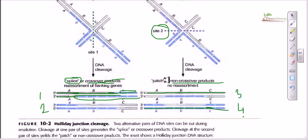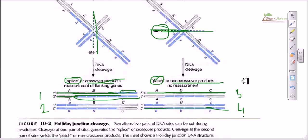That is why we call this kind of product non-crossover products, also called patch recombination products. So to summarize: splice recombination products come from vertical cutting and are crossover products; patch recombination products come from horizontal cutting and are non-crossover products. The take-home message is that resolution is essential — we start with two different DNAs and must end with two different DNAs. The DNA number and gene number will be the same; what varies is just the combination of nucleotide sequences. That is what recombination actually is.